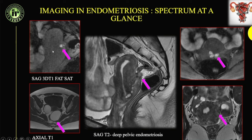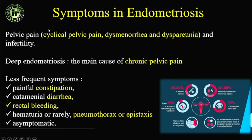Looking at the spectrum, you can divide the pelvis into multiple compartments and pick up endometriotic deposits. To begin with, it can involve the uterus and ovaries themselves, then deep pelvic endometriosis and superficial pelvic endometriosis. Symptomatically, patients will definitely present with symptoms — it's very unlikely that an asymptomatic health checkup patient will present with an endometriotic spectrum of findings.